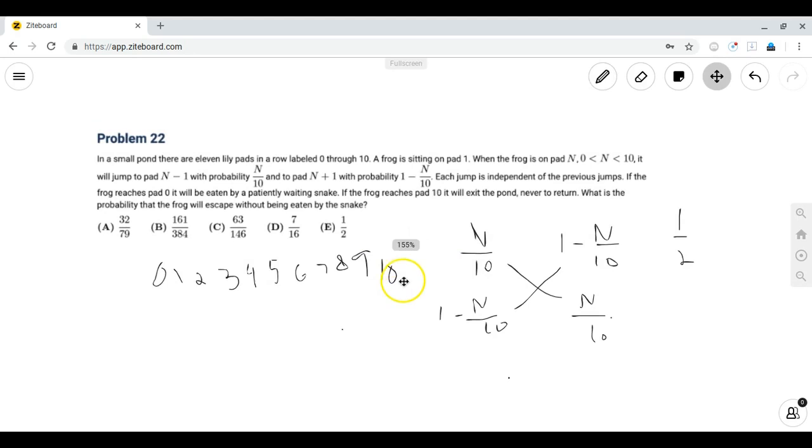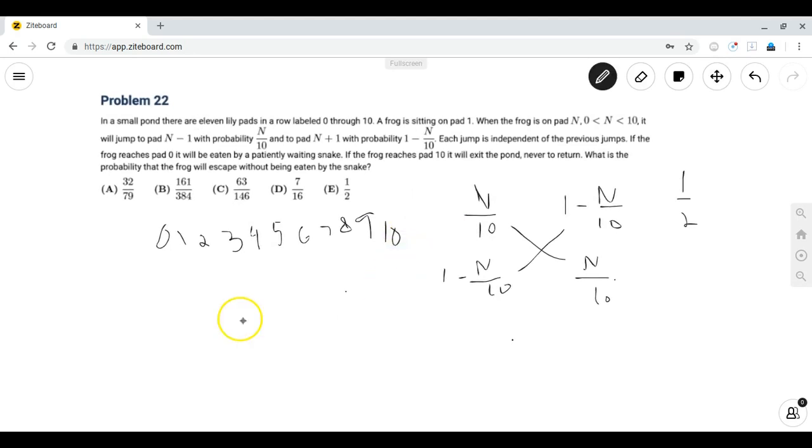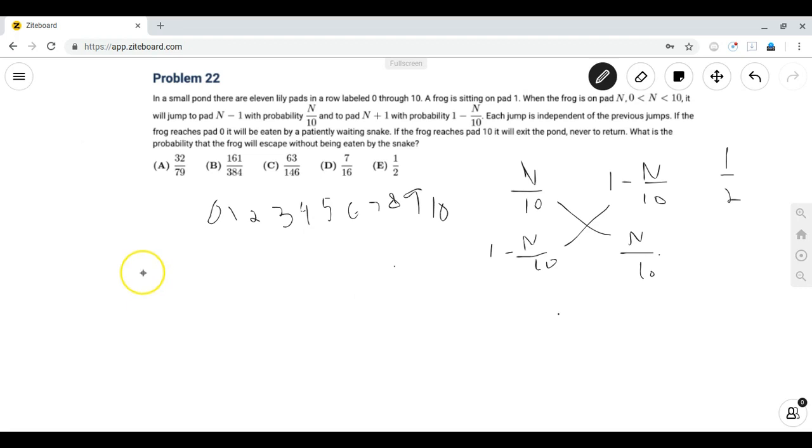Now we only have to create four or five equations. Let's call p of n the probability that the lily pad will reach pad number 5 from point n. It starts at lily pad 1 so we see that p of 1 is equal to 1 tenth p of 0, but since p of 0 is 0 since it will get eaten we can just discard that, plus 9 tenths of p of 2. So p of 1 is just 9 tenths p of 2.